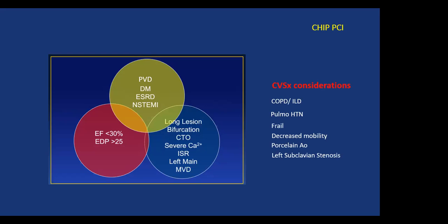This diagram was created by interventional cardiologists, so they never considered the surgical component, which our surgical colleagues put on the table — lung abnormalities preventing effective ventilator weaning post-bypass surgery, severe pulmonary hypertension, frailty, inability to mobilize, porcelain aorta, and left subclavian stenosis. All these factors make the patient high risk, whether from the surgical or interventional perspective.